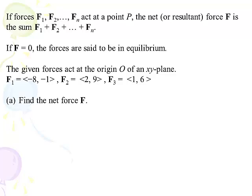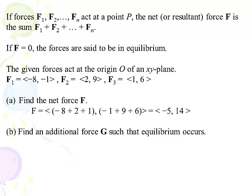Here are three forces F1, F2, and F3, and we want to find the net force. You add up negative 8 and 2 and 1 for the horizontal component, and negative 1 and 9 and 6 for the vertical component of the net force. If you want to add an additional force G so that equilibrium occurs — meaning the result is the zero vector 0, 0 — you look at the net force, which is negative 5, 14, and ask what you'd add to it to end up with 0, 0. You add 5, negative 14. That's because F plus G then equals 0, 0. Find the net force, add the opposite, and you've got equilibrium.